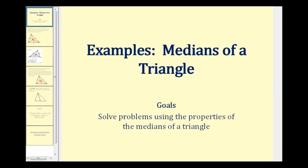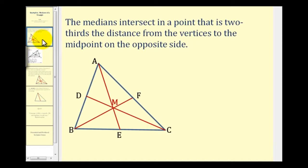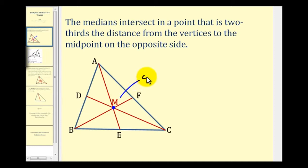Welcome to examples of using the properties of medians to determine unknown values. Before we take a look at our example, let's go ahead and review the Concurrency of Medians Theorem. The theorem tells us that the medians intersect in a point that is two-thirds the distance from the vertices to the midpoint of the opposite sides. This point of concurrency is called the centroid.